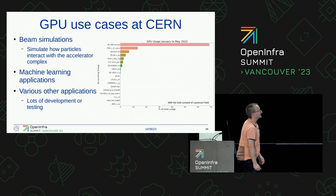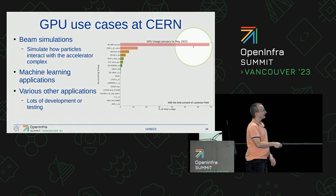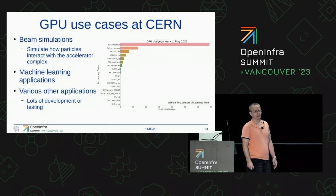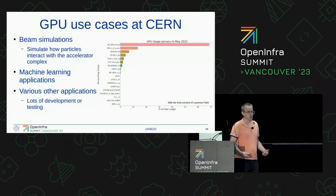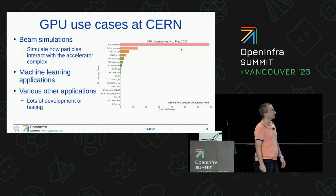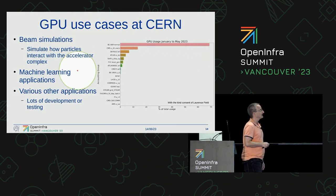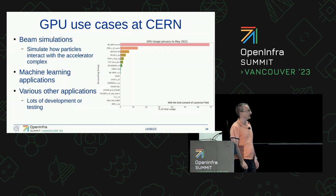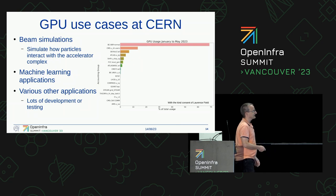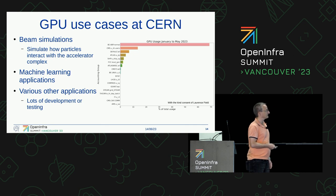Now let me switch to GPUs — that's why I'm here. If you look at this figure on the right-hand side, this is a wrap-up of the number of jobs run by different communities on the batch farm on GPU resources, and you see there's one which is sticking out. These are our colleagues who are running the accelerators, and what they're actually doing is simulating how the particles and the beams interact with the accelerator complex. Besides that, we have machine learning applications, which are mainly run by experiments. They try various things where GPUs may be helpful — there's quite a lot of development and testing ongoing.